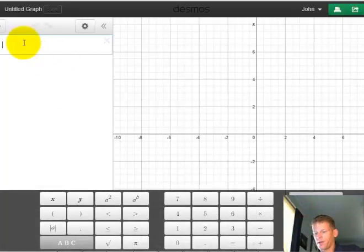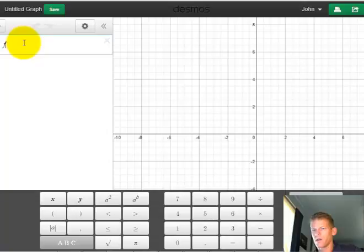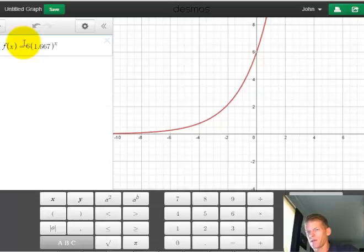And I have, I don't know if you can see me here, so I'm going to put it into Desmos. Desmos, f of x is equal to, we said 6 was the initial amount, times 1.667 raised to the x.